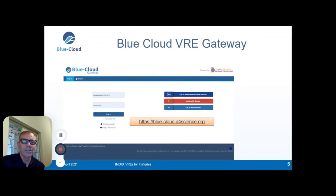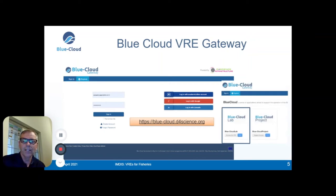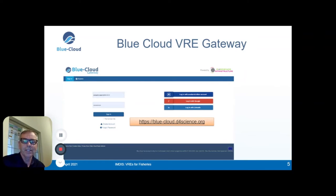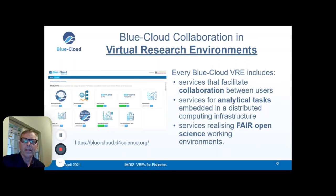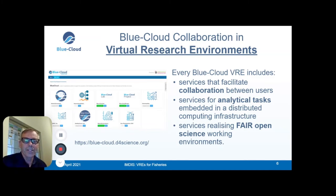To access the VREs, you need to enter the gateway, which accepts different types of user credentials. Once you enter the VRE gateway, you can select the virtual lab you want to use, and then you enter the virtual research environment itself. In the VRE portal, a selection of VREs is available. All VREs share specific facilities: services that facilitate collaboration between users, services for analytical tasks embedded in a distributed computing infrastructure, and services that realize FAIR open science working environments.